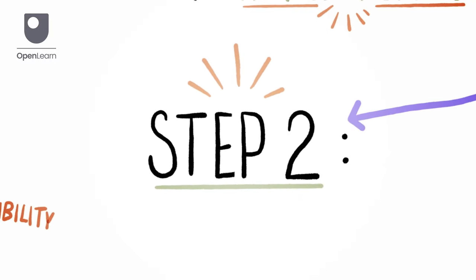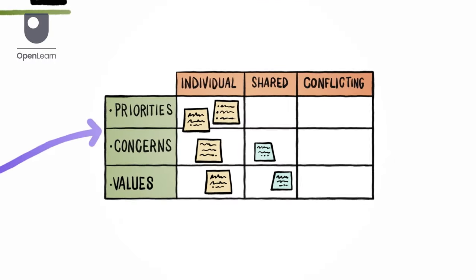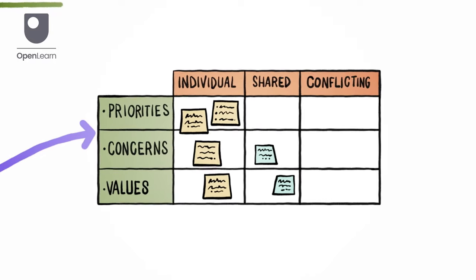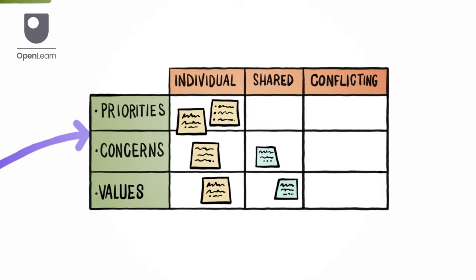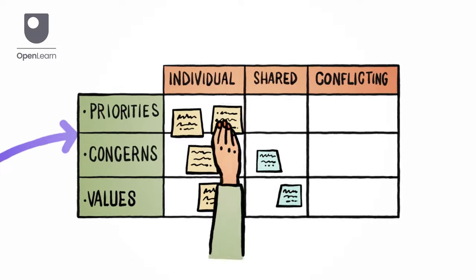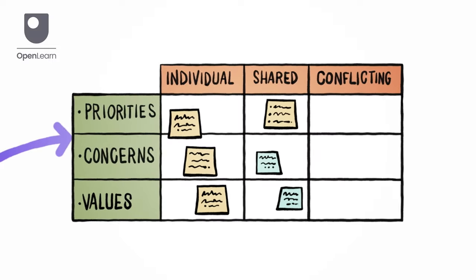Step 2. Once the first step is completed, and all participants have had their turn, they then start clustering similar or complementary priorities, concerns, and values under the column marked Shared.